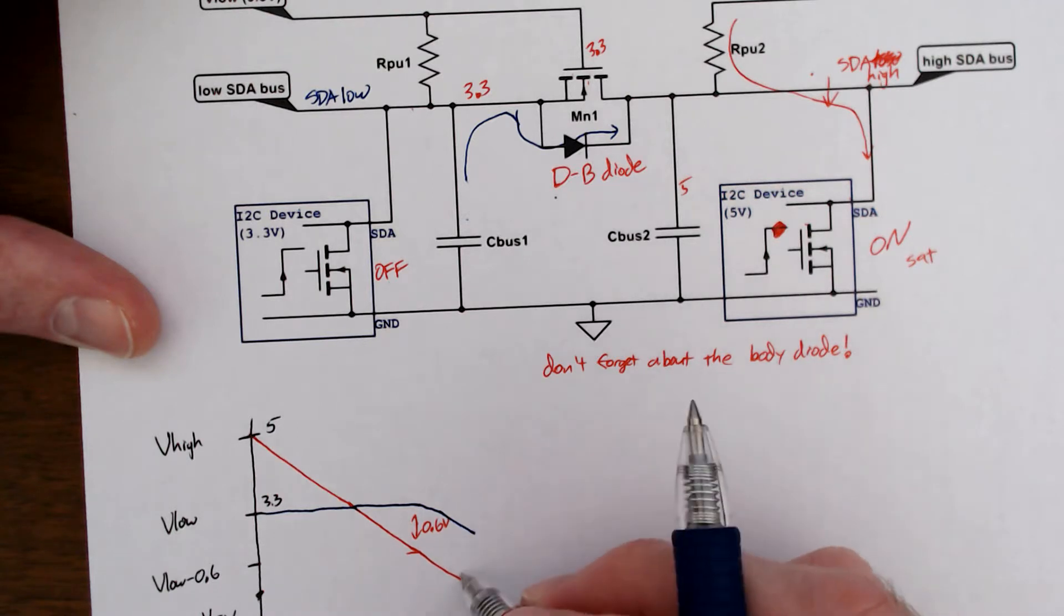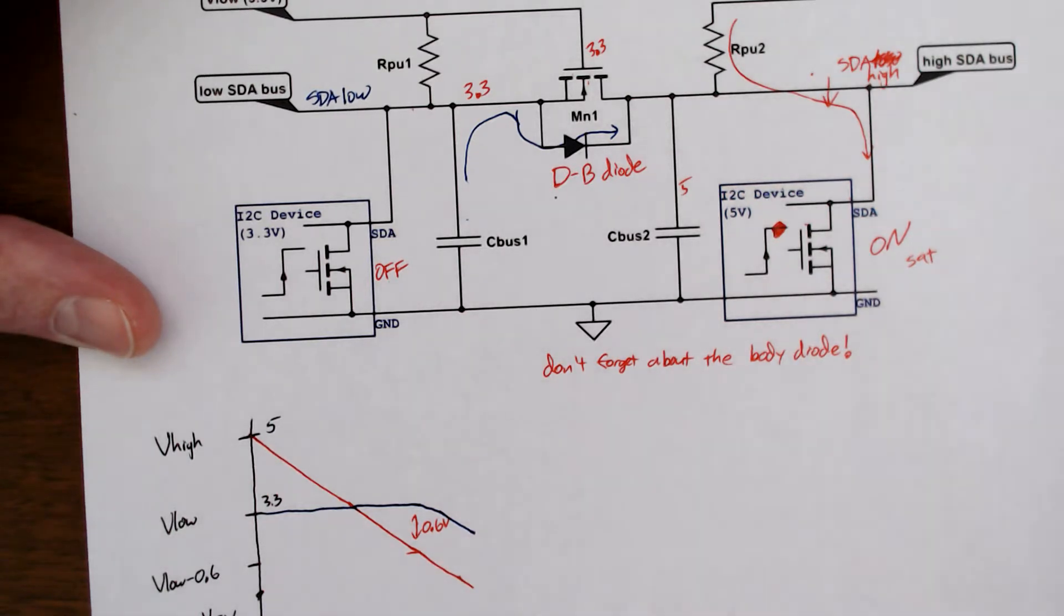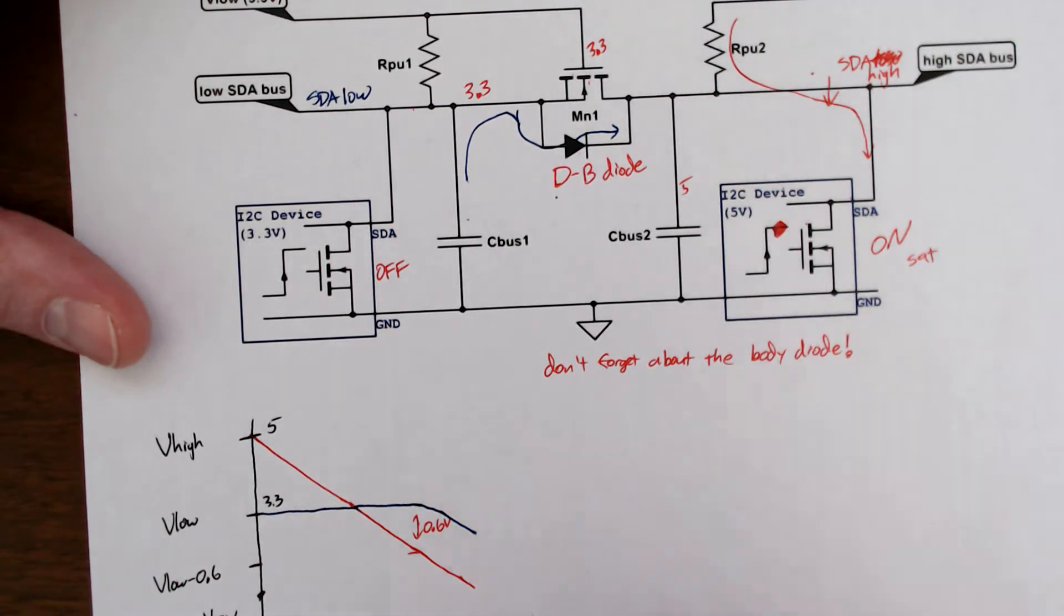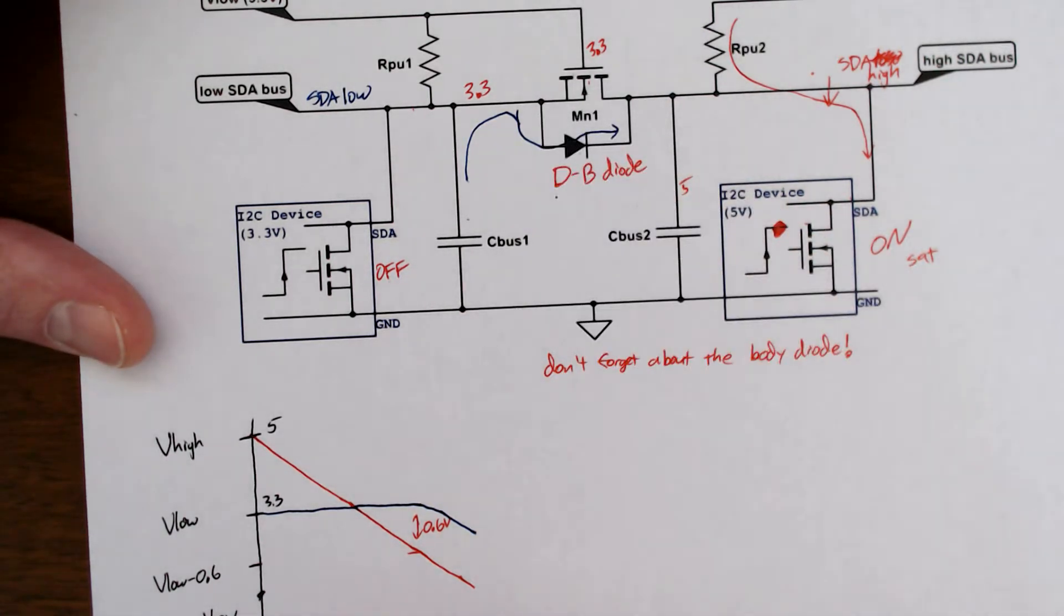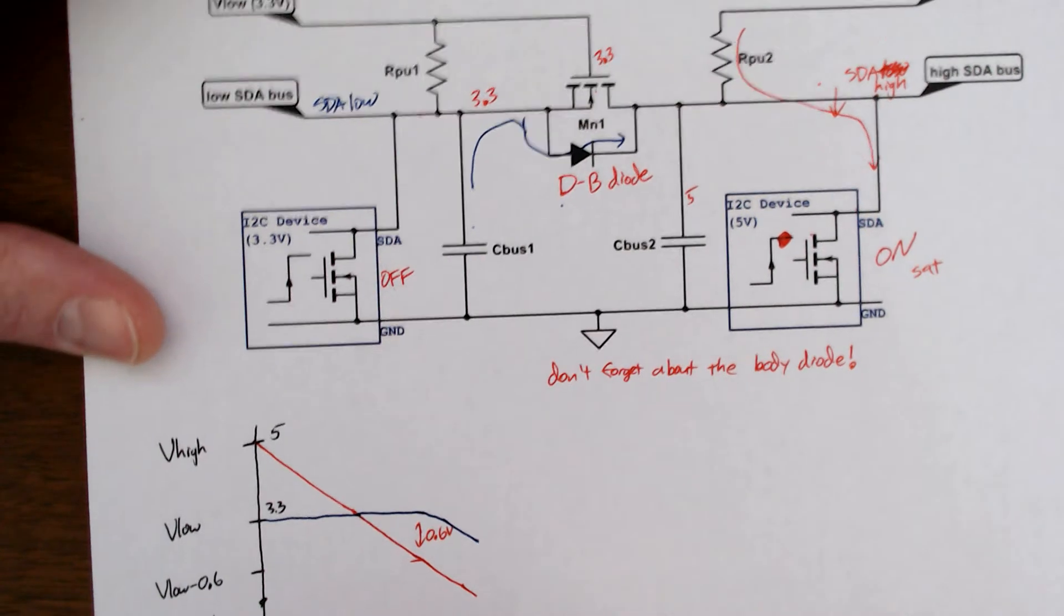Both of them are going to go down. At some point, I'll put my axis here a little bit different. At some point, our V low minus the threshold, there's my pointer, is going to reach,